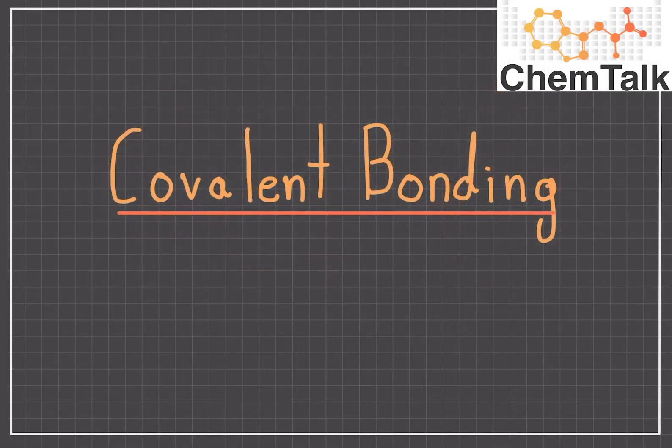Hi everyone and welcome to ChemTalk. Ionic bonds and covalent bonds are the two main ways for atoms to bond together to form molecules. In this video we will be reviewing covalent bonding.